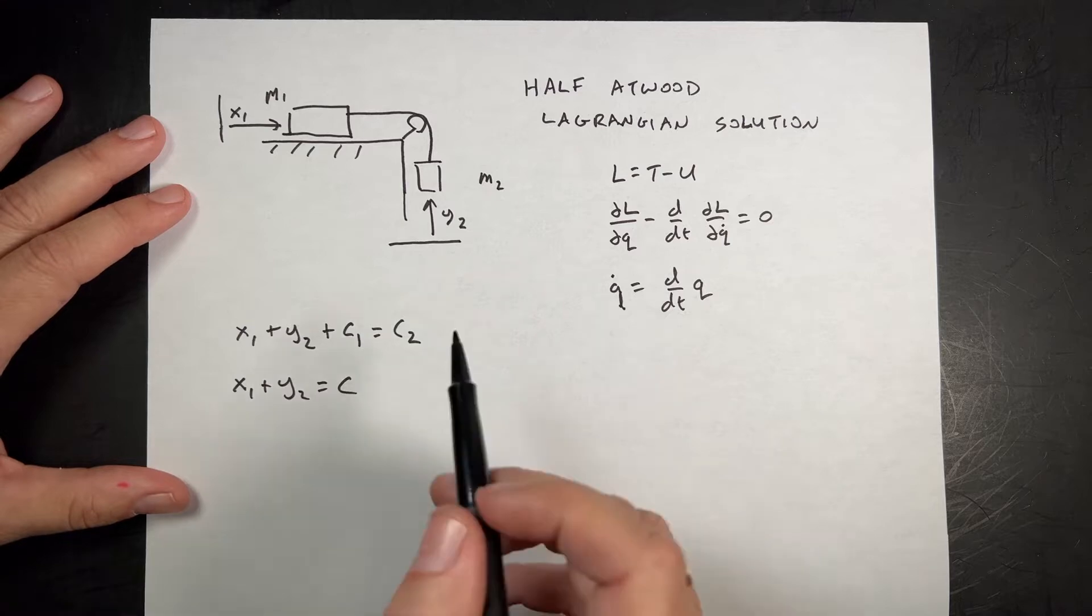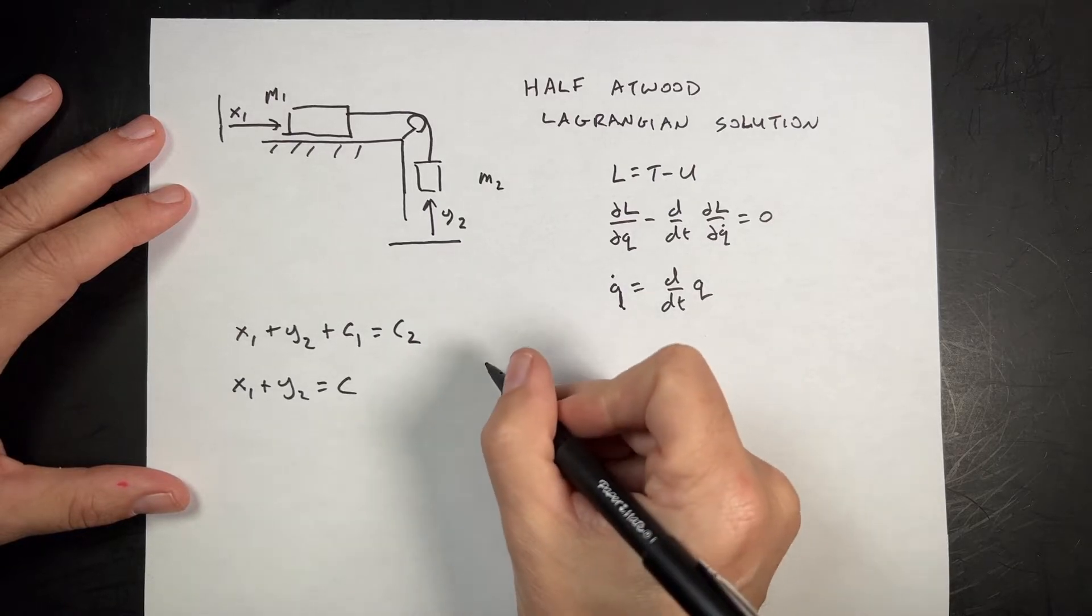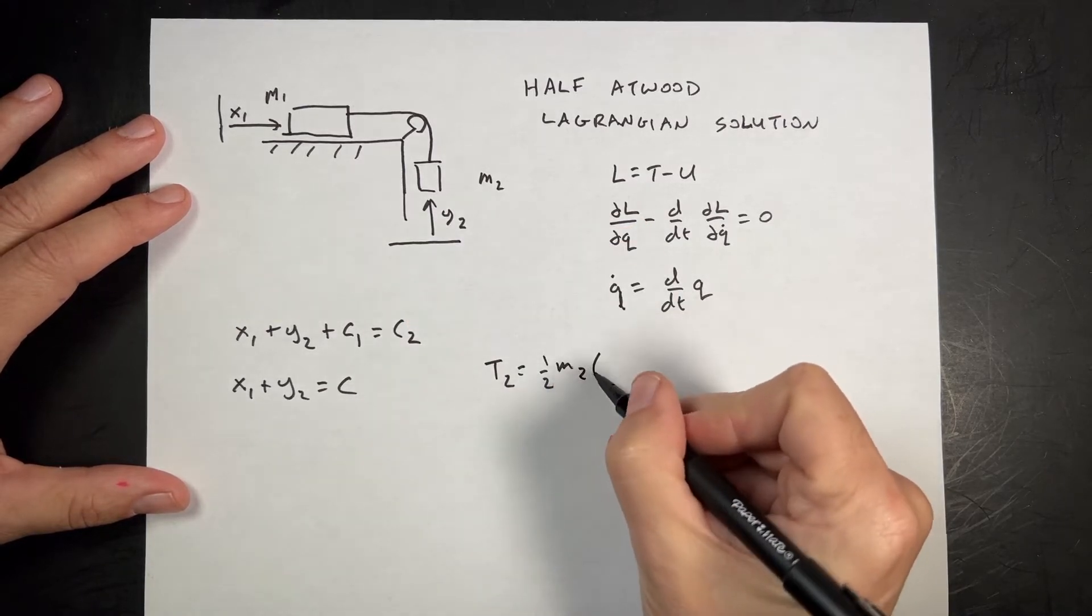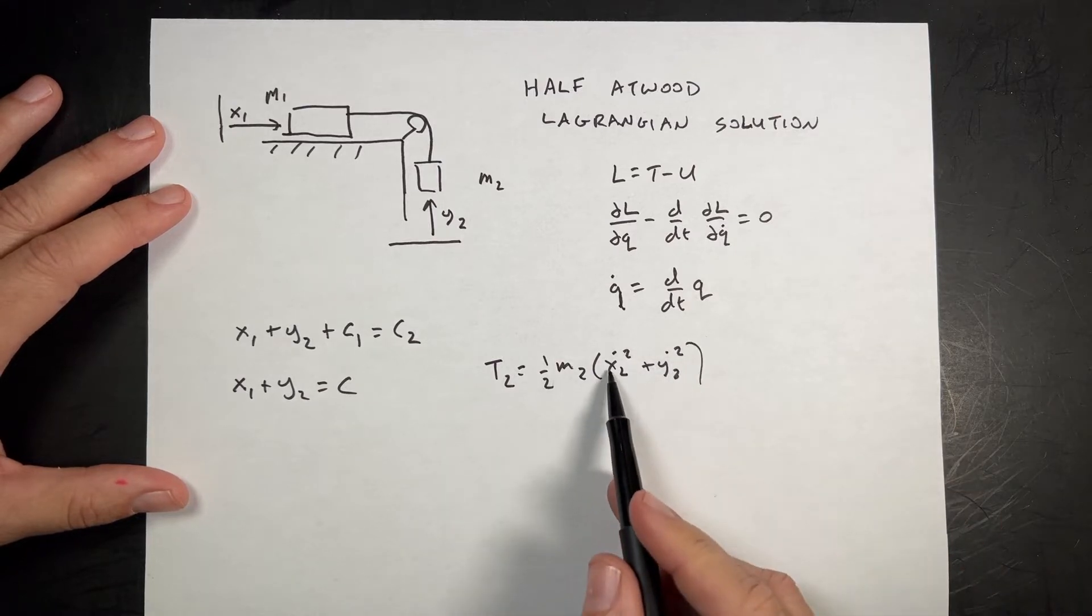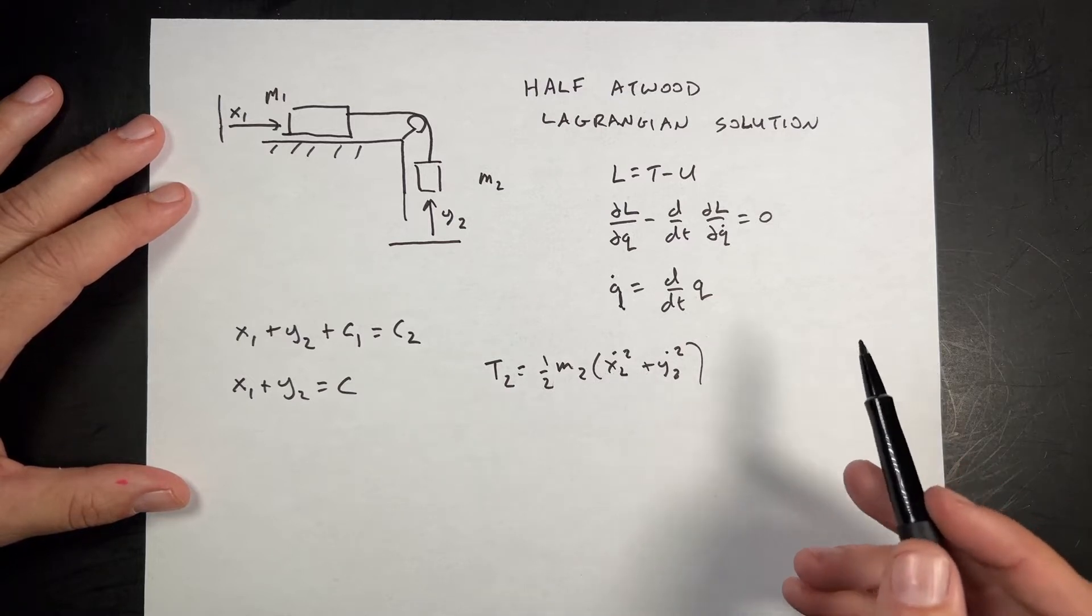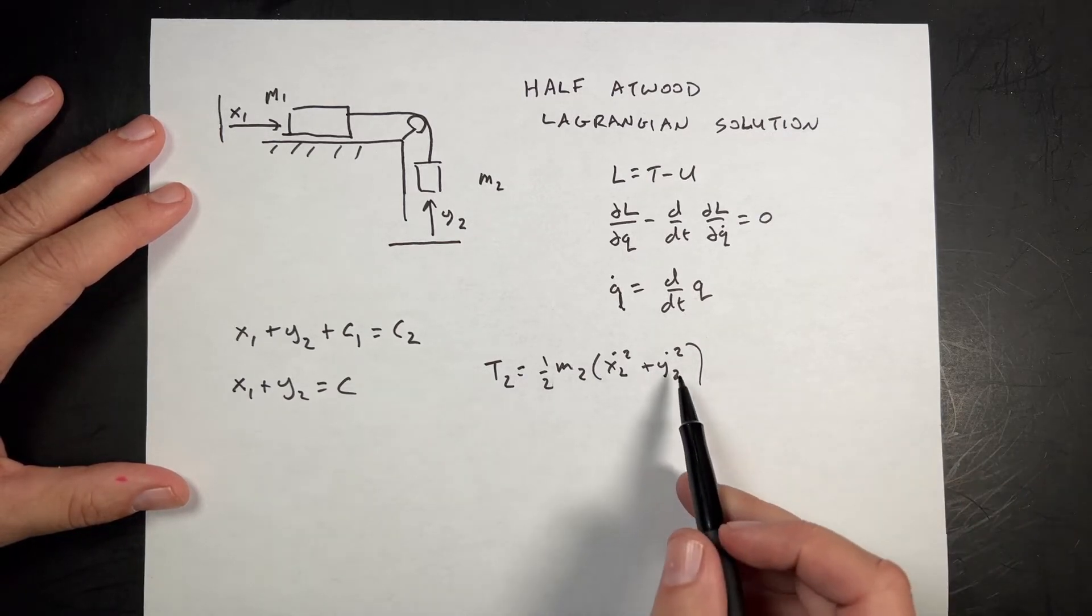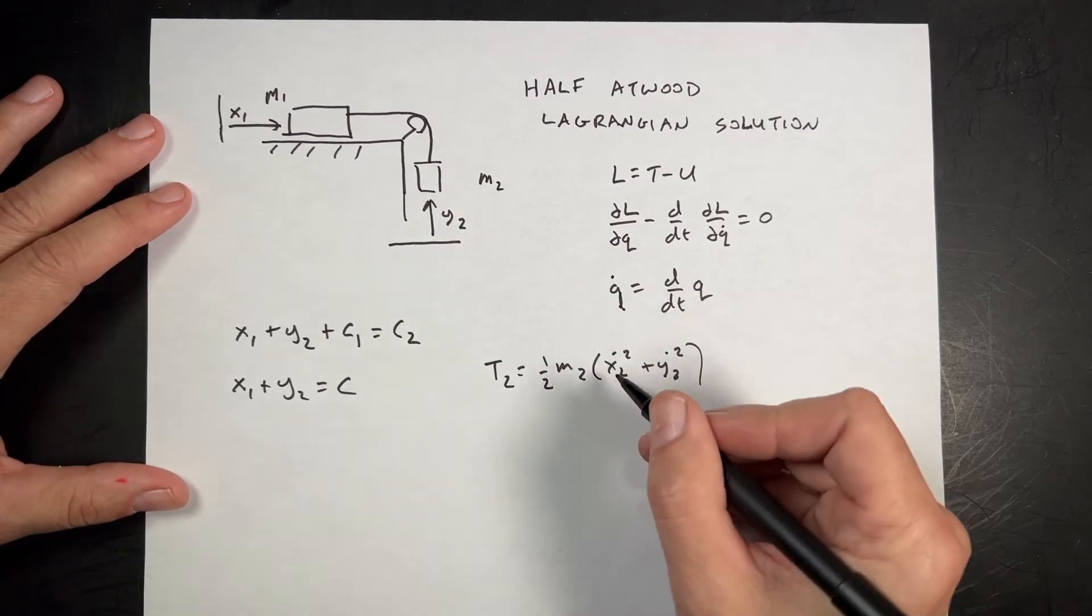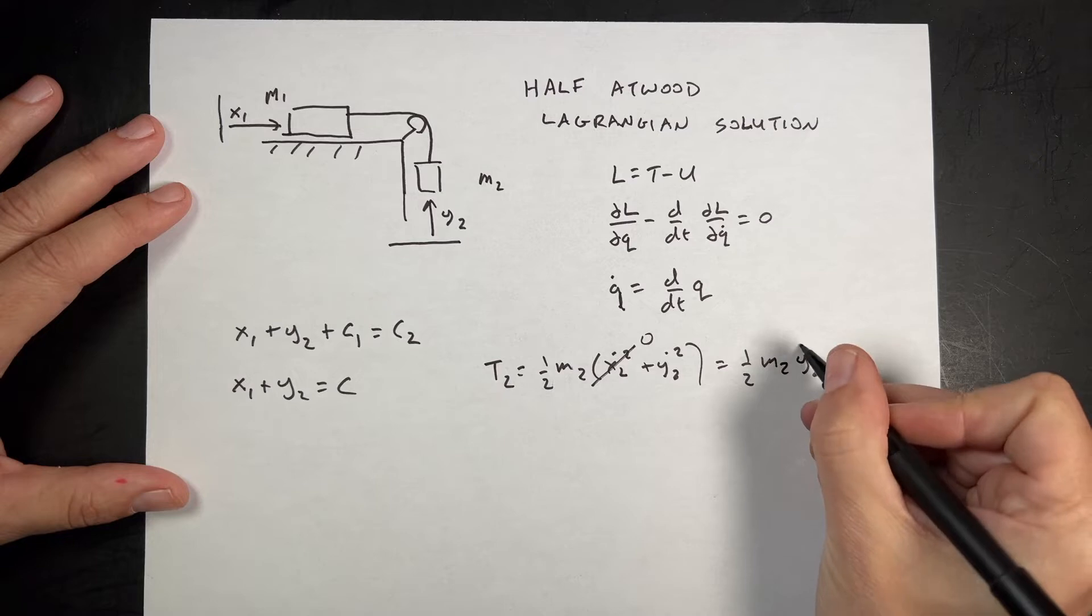Now I need to get the kinetic energy of both of these masses. The easiest way to get the kinetic energy, I can say T2 is one-half m2, x2 dot squared plus y2 dot squared. It's the velocity squared in Cartesian coordinates. I left off z because z went on vacation. For this case, y2 is the Cartesian coordinate and it doesn't move in the x direction, so that's zero. So T2 is one-half m2 y2 dot squared.